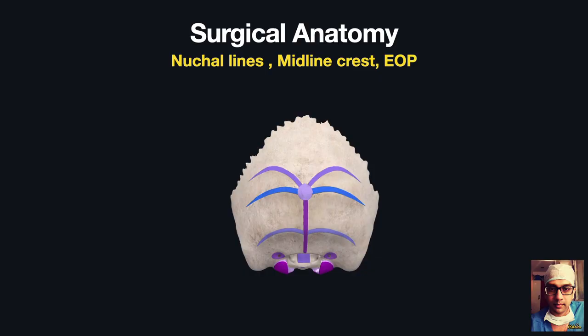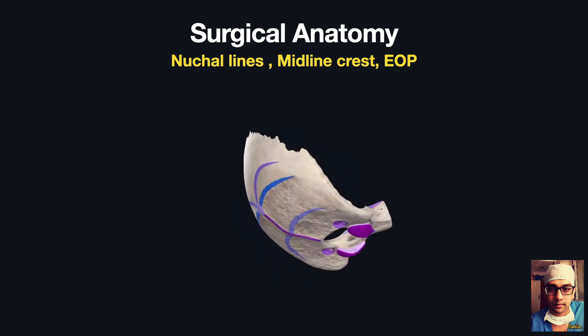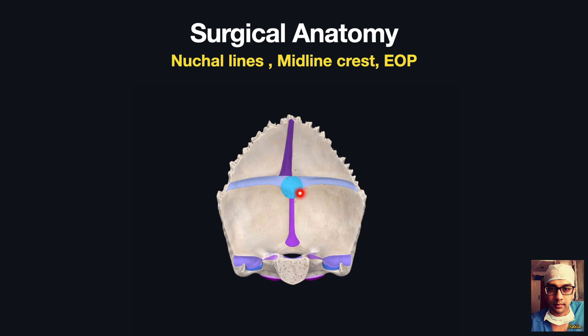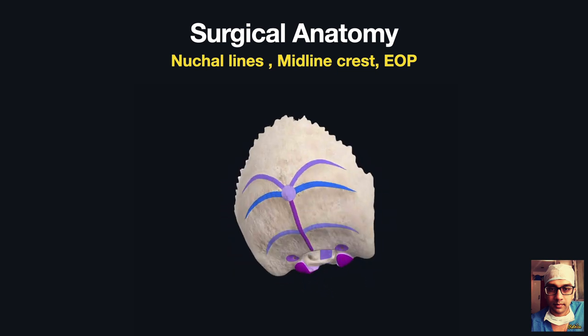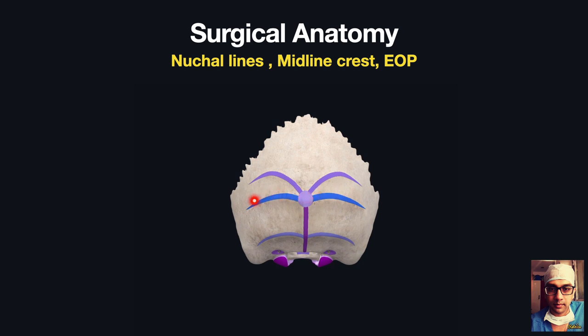Let's begin with the occipital region. The surgical anatomy of the occipital bone: there are three nuchal lines — the supreme, the superior, and the inferior. The supreme is not so prominent. These nuchal lines converge on the external occipital protuberance, and there is a midline crest running downwards from it. If you flip the bone around, the external occipital protuberance corresponds to the confluence of the sinuses, and the superior nuchal line corresponds to the transverse sinus.